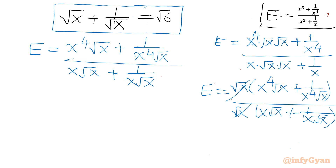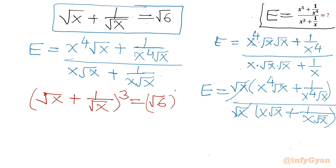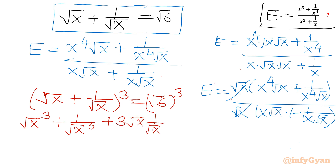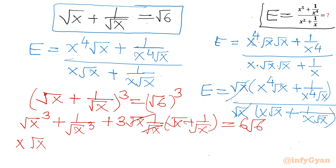We know root x plus 1 over root x equals root 6. Now I will cube both sides. Expanding root x plus 1 over root x whole cube using the A plus B whole cube formula: root x cubed plus 1 over root x cubed plus 3 times root x times 1 over root x times root x plus 1 over root x equals root 6 whole cube, which is 6 root 6. So x root x plus 1 over x root x plus 3 root 6 equals 6 root 6.